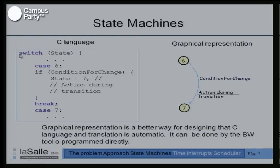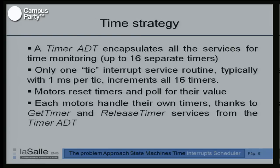We have introduced the cooperative approach and know how to do many things with the appearance of simultaneity. But what about time? Control systems need to wait for time — protocols need to wait for timeout, keyboards need to wait for debounce, and analog signals need to wait for sampling time. Our timing strategy is based on an abstract data type called timer, which encapsulates the service for monitoring up to 16 timers.